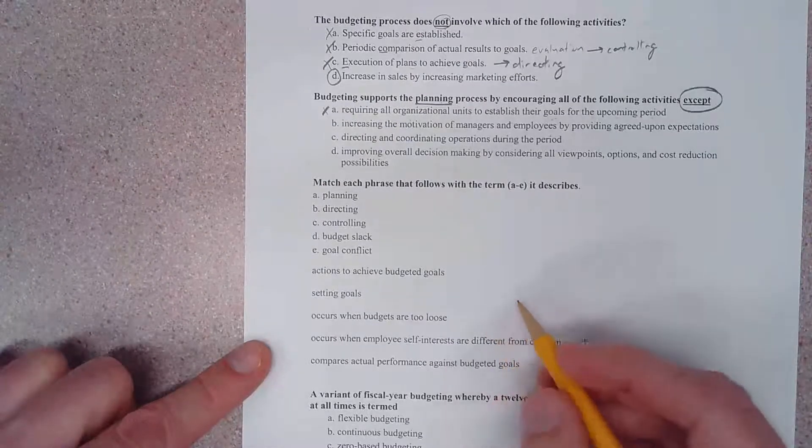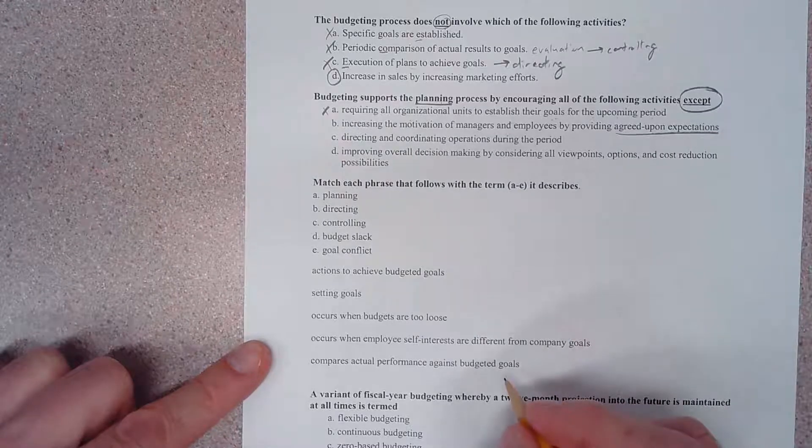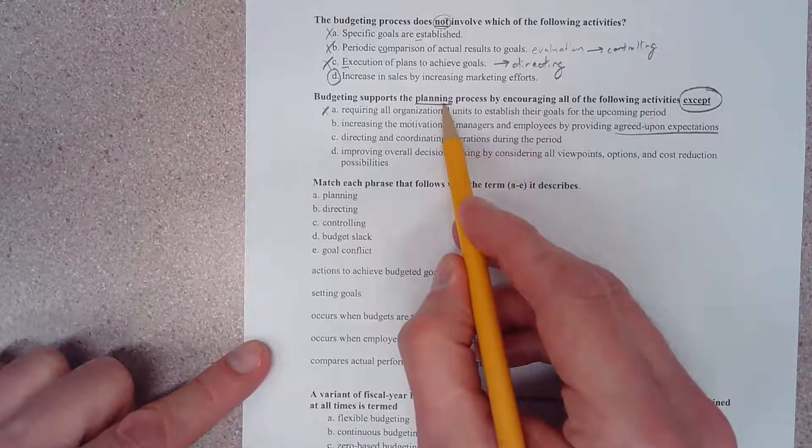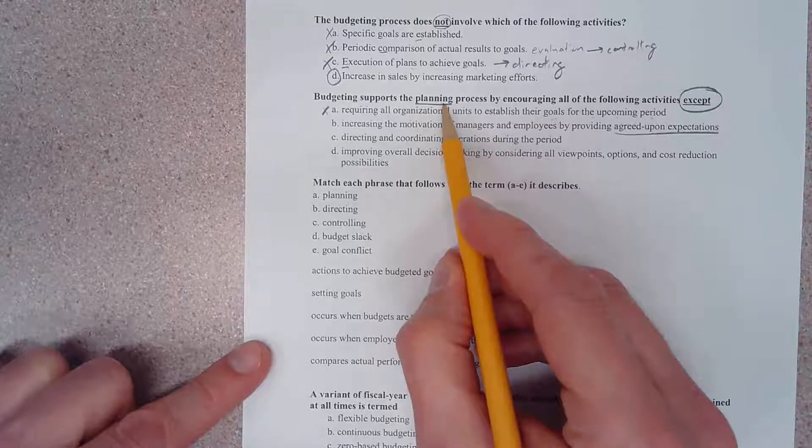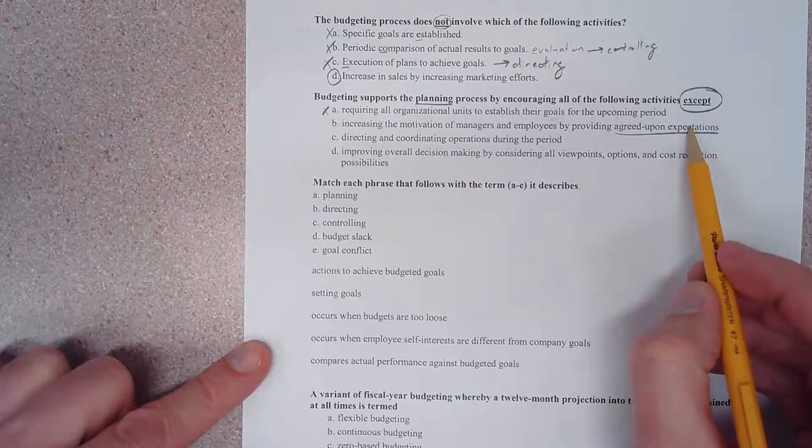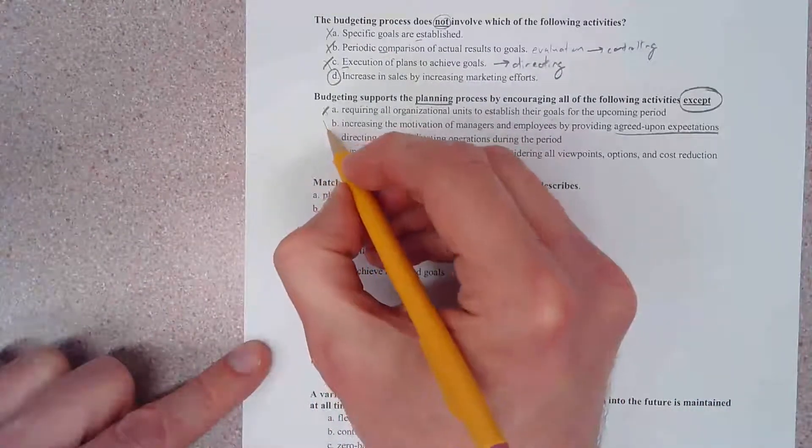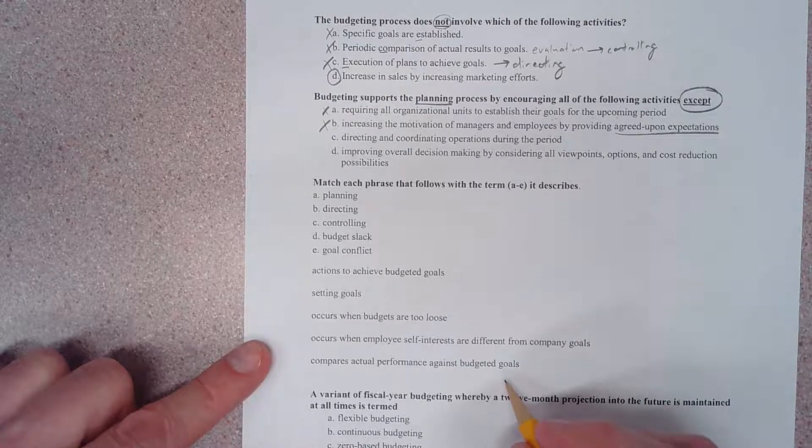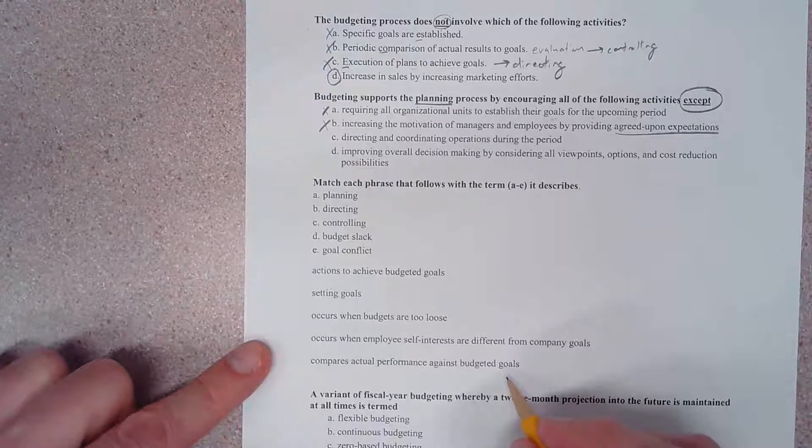Let's look at B. Increase the motivation of managers by providing agreed upon expectations. Expectations are definitely part of the plan process. I plan for you to make 8,000 units of production. It is my expectation that you will make 8,000 units of production. Therefore, choice B is definitely part of the planning process and as such is wrong.